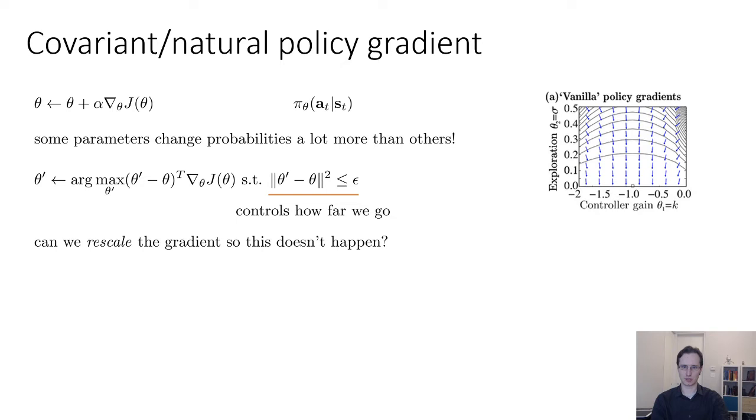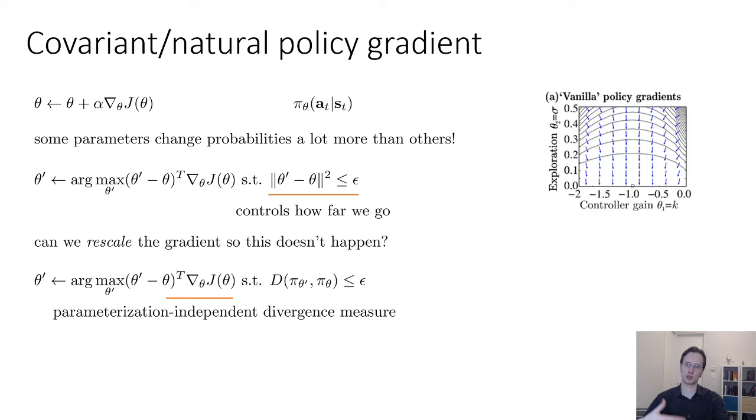So can we rescale the gradient so that this doesn't happen? What if we instead iteratively solve this problem, maximize the linearized objective, but subject to a constraint that the distributions don't change too much? So here D is some measure of divergence between pi theta prime and pi theta, and we'd like that divergence measure to be less than or equal to epsilon. So we'd like to pick some parameterization independent divergence measure, a divergence measure that doesn't care about how you're parametrizing your policy, just which distribution it corresponds to. A very good choice for this is the KL divergence. The KL divergence is a standard divergence, a Bregman divergence on distributions. It's a measure of divergence on distributions, and it is parameter independent, meaning that no matter how you parametrize your distributions, the KL divergence will remain the same.